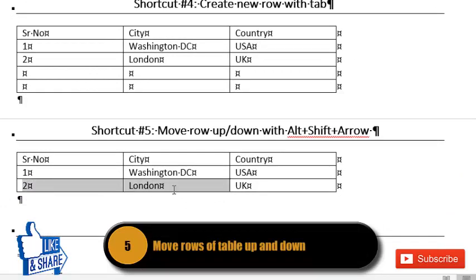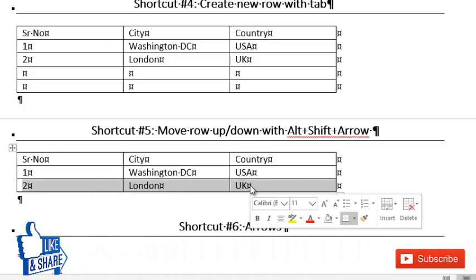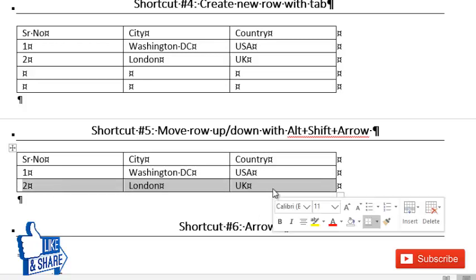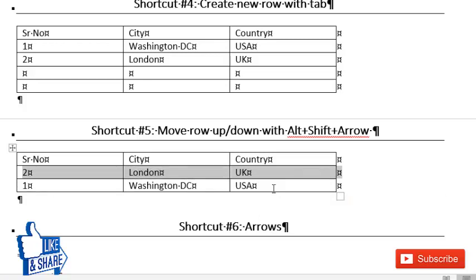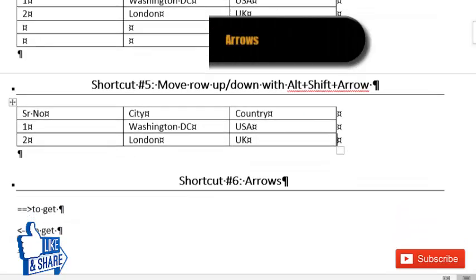The fifth shortcut is my favorite. To move a row up or down, instead of copying and swapping rows, simply select the entire row you want to move and press Alt+Shift+Up Arrow to move it up, or Alt+Shift+Down Arrow to move it down. This automatically repositions the row.